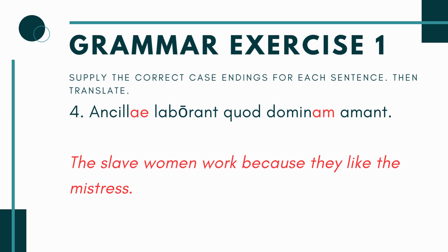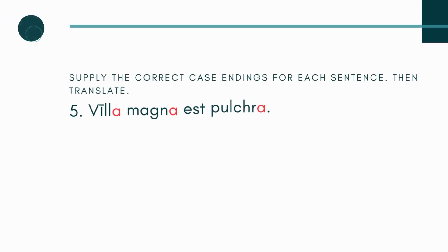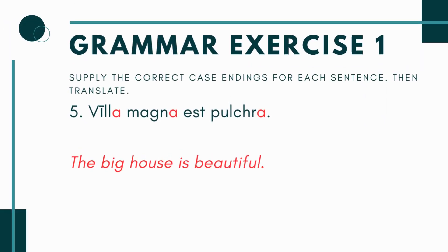I'll just preface this again: this is one of those Road to Latin sentences that, you know, in the 1930s you could probably say something like this. I don't think it's really great, sitting here in 2023, to be talking about slaves or slave women liking their mistresses. We're going to keep the sentences the way they are in the textbook so you can work through it. In my own class I sometimes adjust these, but if you're using Road to Latin, I'll keep it as the authors intended.